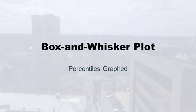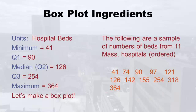Enough double dipping — we're going to move on to the box and whisker plot, which is kind of like your percentiles getting graphed. Let's go back to our ingredients — we already created our box plot ingredients. That's why I trickily went through those quartiles first, because now we've created our ingredients to make a box plot. To summarize what we have: hospital beds was what we were counting.